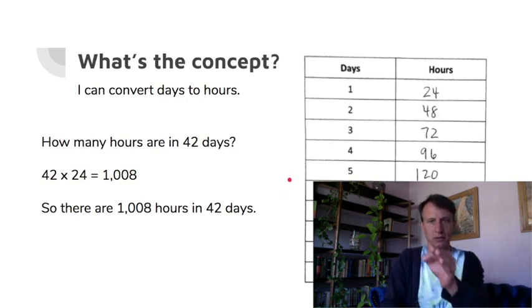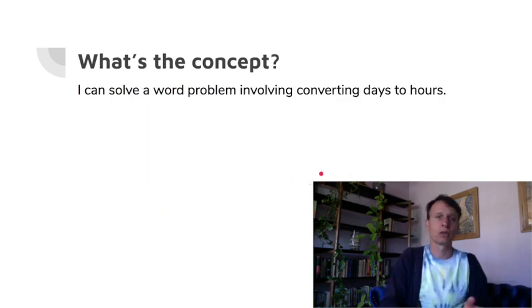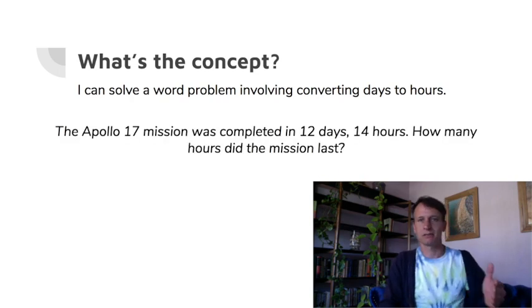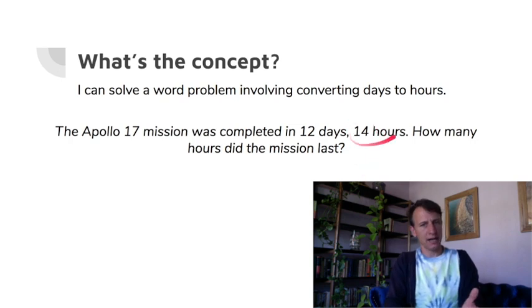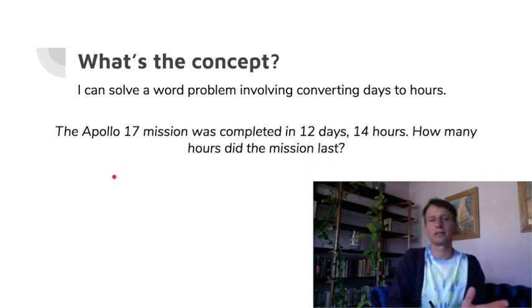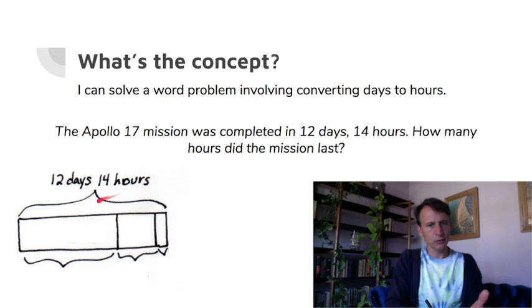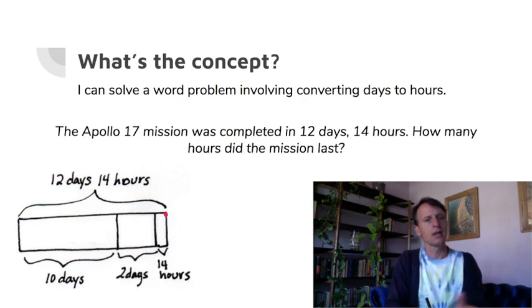All right, now here we go. We're just gonna do one word problem. This is gonna be a pretty short lesson here. Apollo 17 spacecraft mission was completed in 12 days, 14 hours. How many hours did the mission last? So we have 14 hours there—we don't have to do anything with that, it's already hours. We'll just make sure we include it later. So we have the 12 days. Now here's a way you can do this in your head. When you draw your tape, the whole thing is 12 days, 14 hours, right? And you notice what I did with the days here: I split the 12 days into 10 days and two days, and then we of course again have the 14 hours.